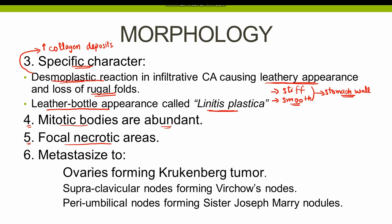Gastric tumors metastasize through either blood or lymphatics. Hematogenous metastasis is to the lungs and more particularly the ovaries; metastatic cancer in the ovaries is known as Krukenberg tumor, characterized by the presence of signet ring cells within the tumor. Lymphatic spread is to the supraclavicular lymph nodes, causing swelling — these swollen lymph nodes are known as Virchow's nodes. The tumor also spreads to the peri-umbilical lymph nodes, resulting in an abdominal nodule known as Sister Mary Joseph nodules.